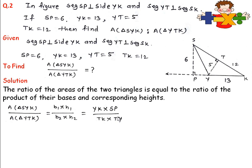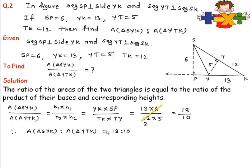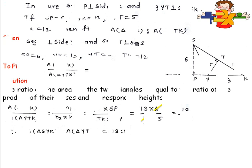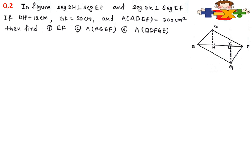Now we put in the values: YK is 13 and SP is 6, so 13 times 6; TK is 12 and TY is 5, so 12 times 5. We can cancel 12 by 6 to get 2, giving us 13 upon 2 times 5, which is 13 upon 10, or 13 ratio 10. So the ratio of the areas of these two triangles is 13 ratio 10.